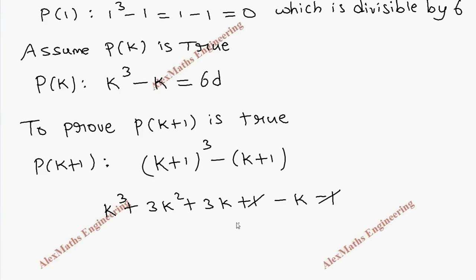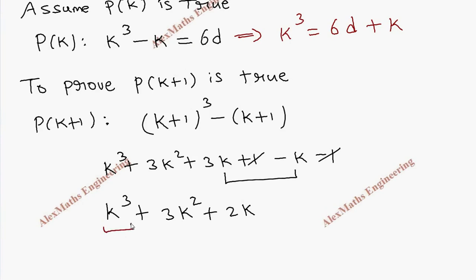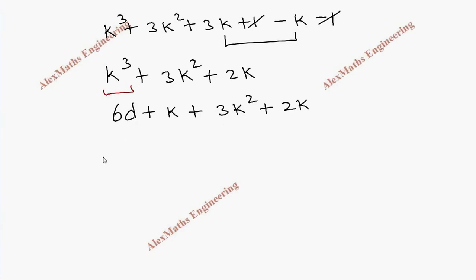We can cancel these two and we can subtract this, so k³ + 3k² + 2k. But from here the value of k³ is 6d + k. We are going to replace here the value of k³ is 6d + k, then we have 3k² then 2k.